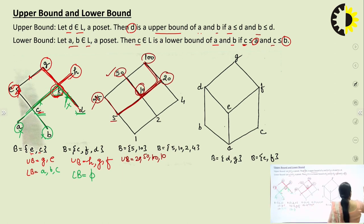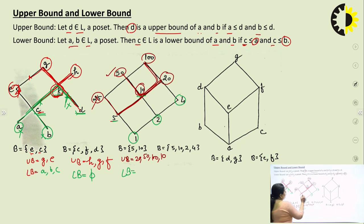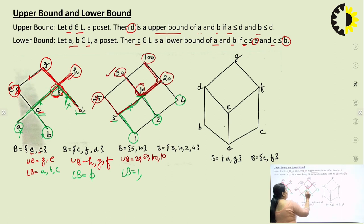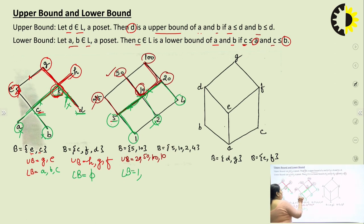For the lower bound of {5, 10}, candidates are 1, 2, 4, and 5. Is 1 related to 5? Yes. Is 1 related to 10? Yes. So 1 is in the lower bound. Is 2 related to 5? No. So 2 is not in the lower bound. 4 is also not related to 10 or 5 — requires moving downward. By reflexivity, 5 is related to itself and to 10, so 5 is in the lower bound of {5, 10}.